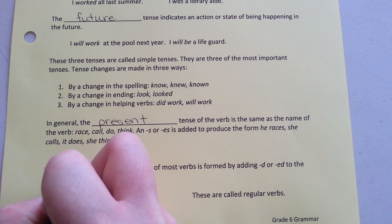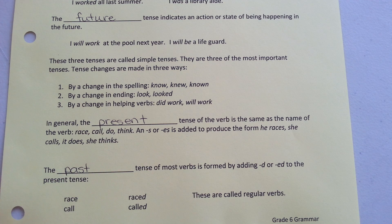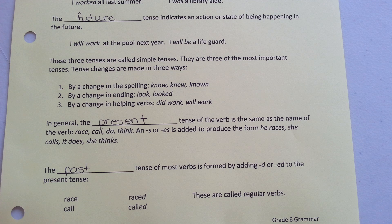The past tense of most verbs is formed by adding D or ED to the present tense. So race becomes raced, call becomes called.